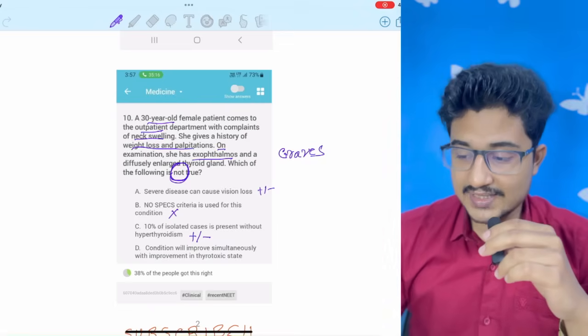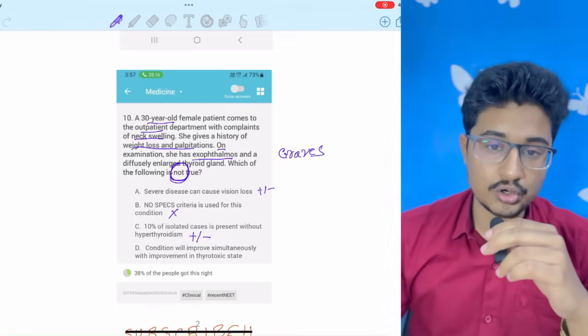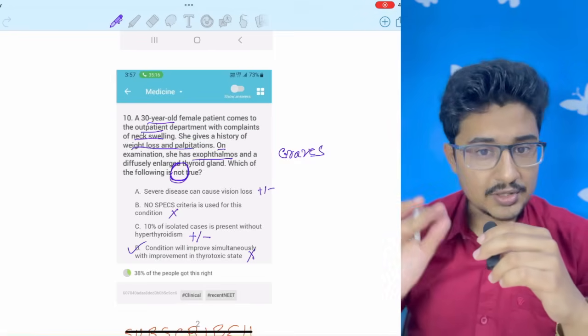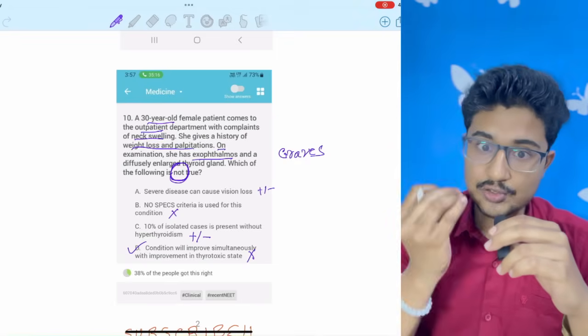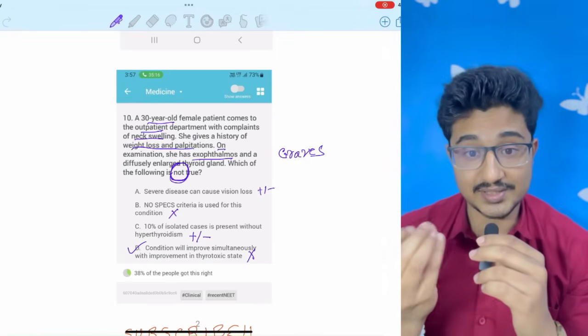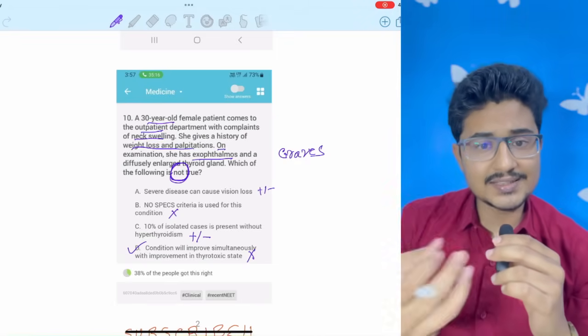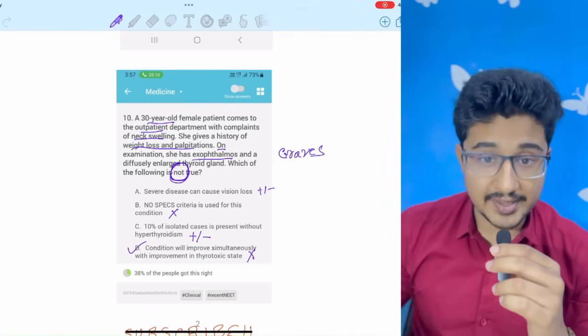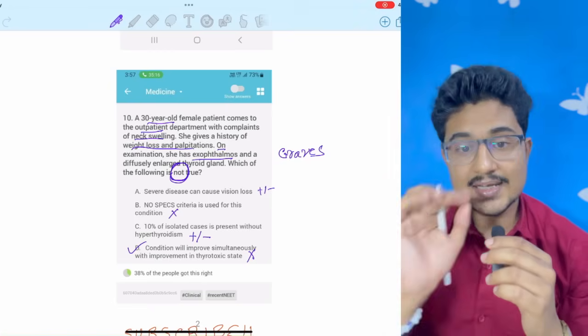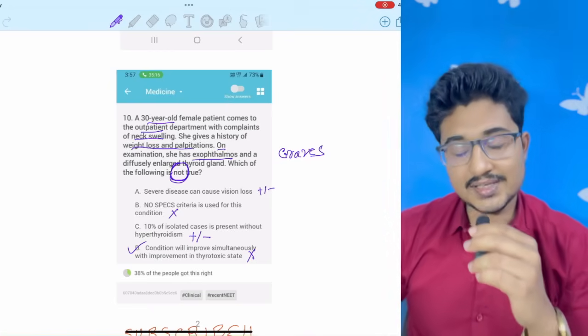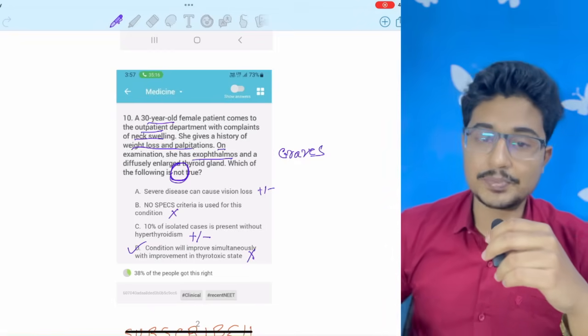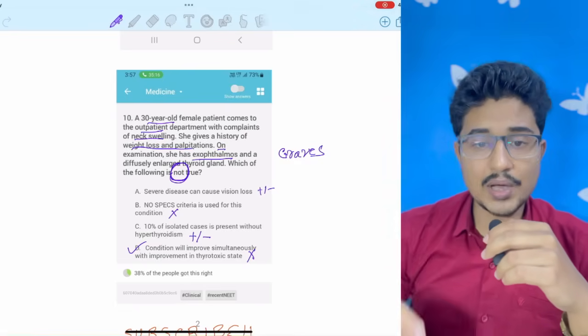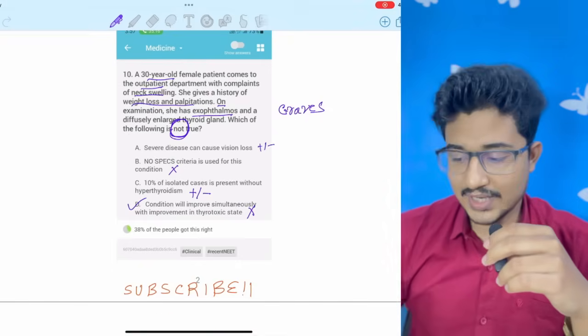And condition will improve simultaneously with improvement of the thyrotoxic state. No, this is a completely wrong statement. So, this will be the correct answer. Because thyroid ophthalmopathy is caused by the glycosaminoglycan deposition in the orbit. So, if the hyperthyroid state is controlled also, you cannot dissolve the glycosaminoglycans and the fibrosis that has taken place. It is irreversible. So, this statement is wrong. So, this is completely wrong statement. In this question, I didn't know about the other options, but I know the correct option. So, directly marking it.